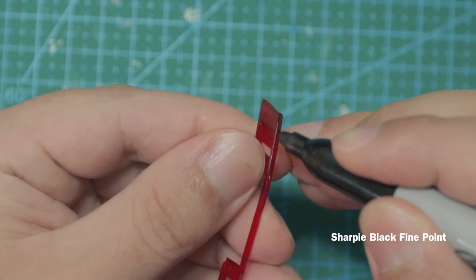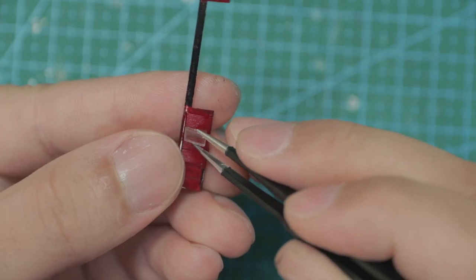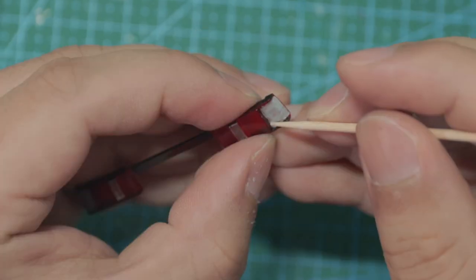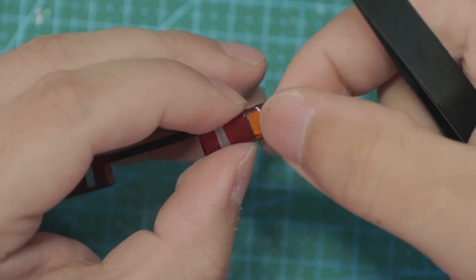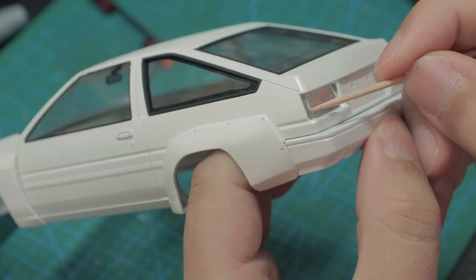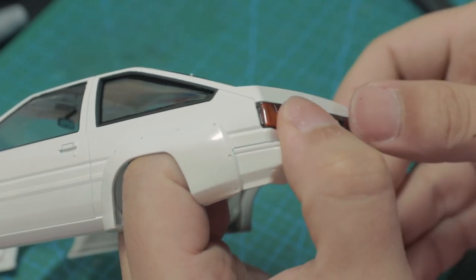I use black sharpie to imitate the rubber seals around the light to make it look more realistic. But one thing to keep in mind is that if you are to apply decal solution around that area, the alcohol in the decal solution will wash off the marker and make a huge mess and you don't want any of that.